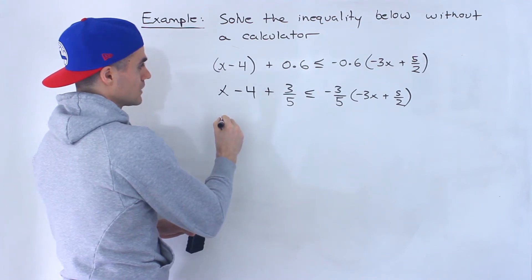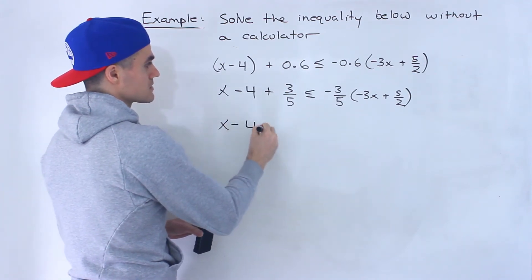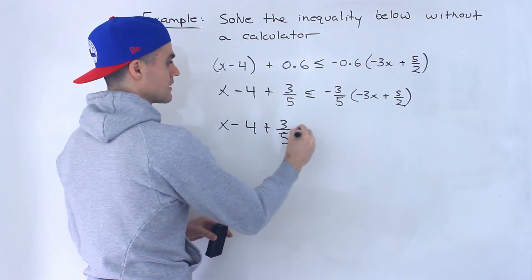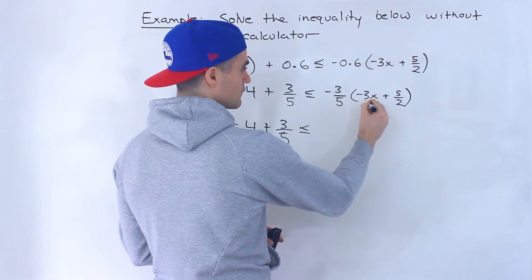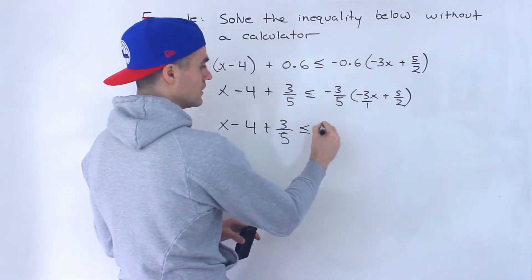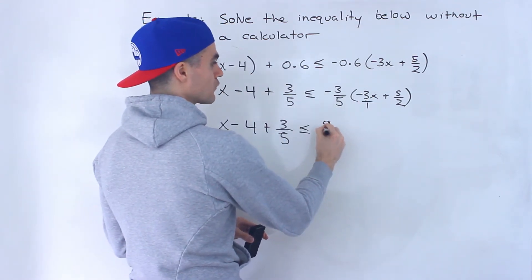let's rewrite this left side. What I'm going to do is I'm going to take this and distribute it in the bracket. So negative 3 over 5 times negative 3x. This negative 3 is like over 1. That would give us 9 over 5x.